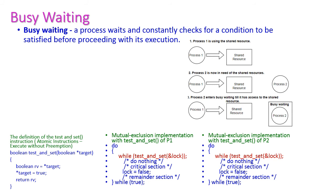Now let us understand what busy waiting is. Busy waiting means a process waits and constantly checks for the condition to be satisfied before proceeding with its execution. Here, process 1 is using the shared resources. When process 2 comes to access the shared resources, since process 1 is already accessing them, process 2 has to wait. Process 2 enters busy waiting because it has to continuously check whether process 1 has completed its execution before it can enter.